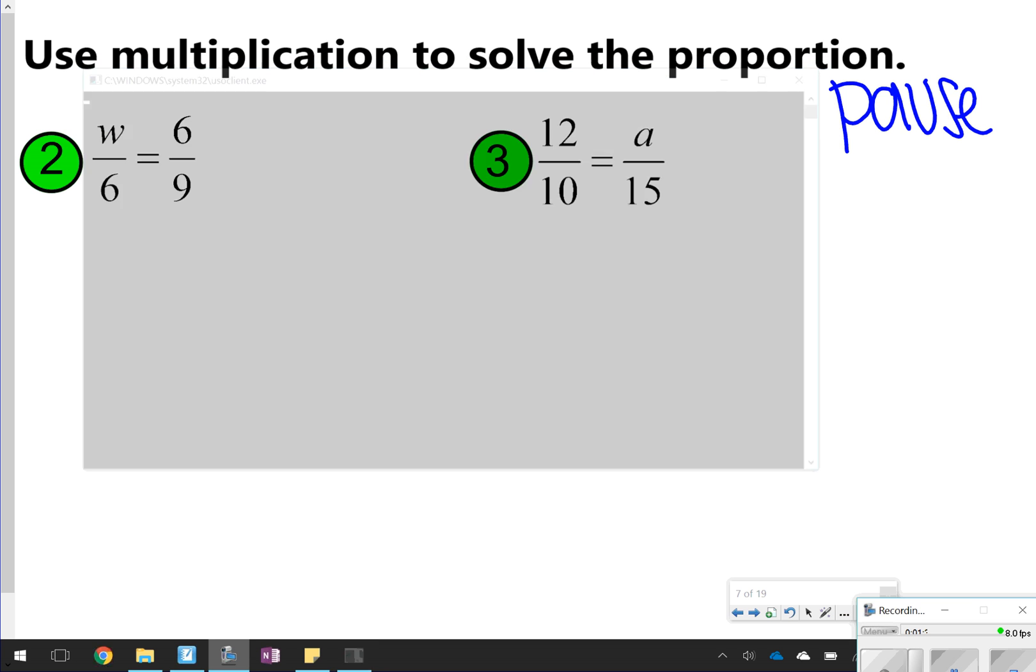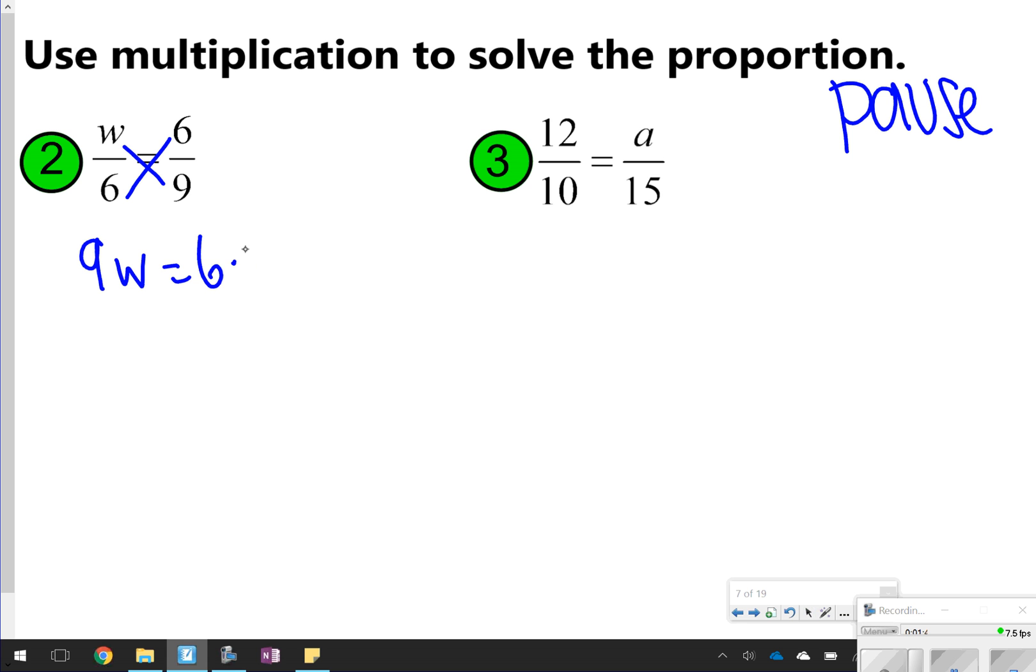All right, the first thing we're going to do here is cross-multiply, so 9 times w and 6 times 6. 9 times w is 9w, and 6 times 6 is 36. Then I'm going to divide both sides to isolate the variable, so whatever the variable is attached to, essentially. w is equal to 4.